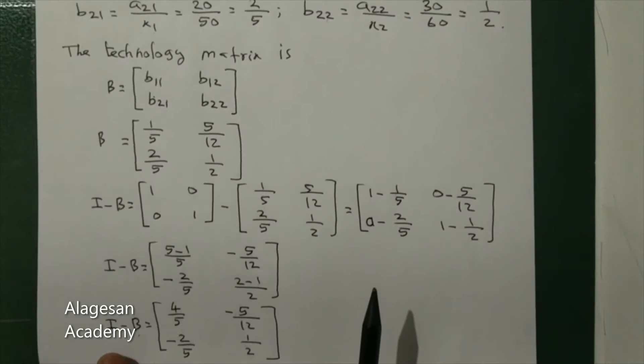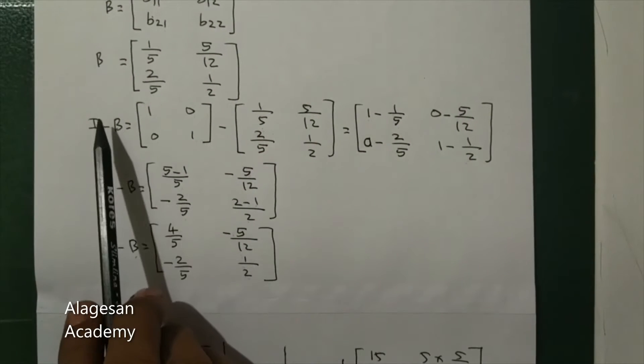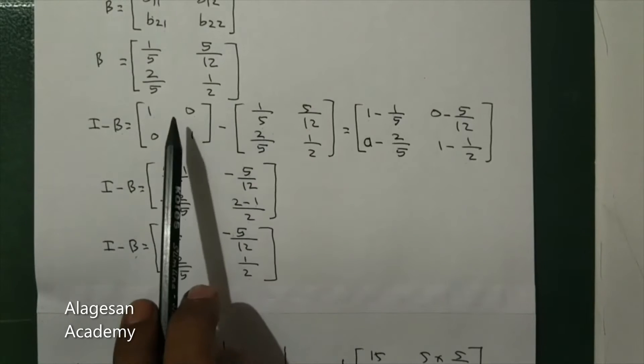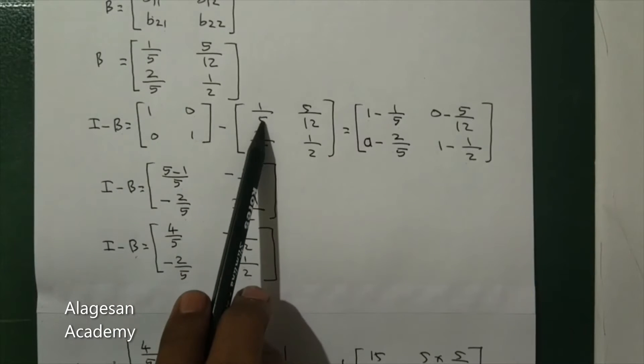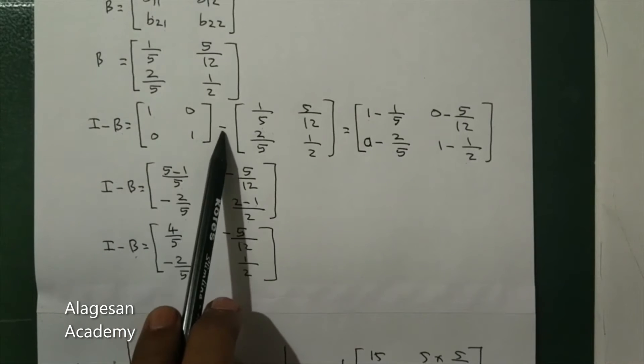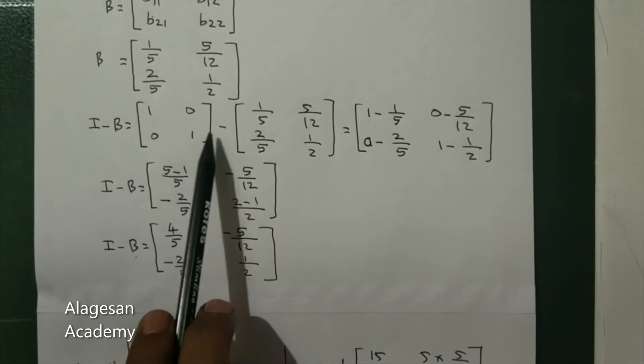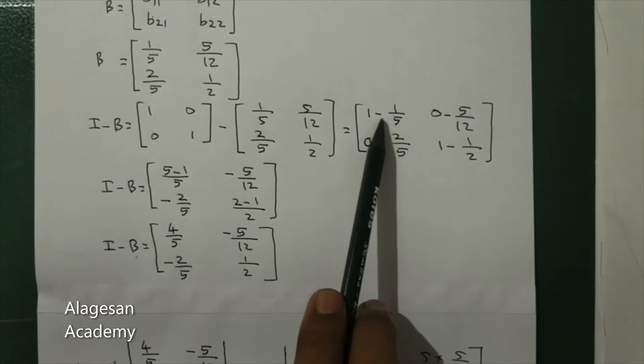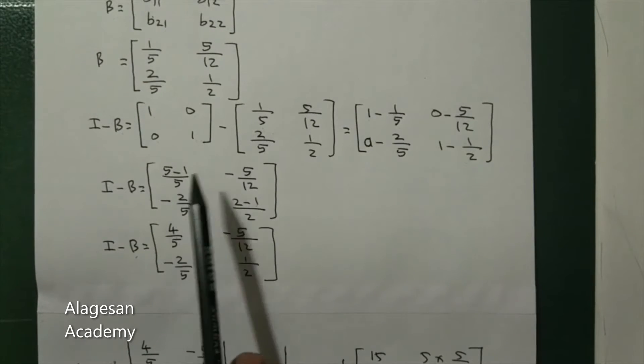That is the technology matrix. The matrix I minus B is: 1 minus 1/5 which is 4/5, minus 5/12, minus 2/5, and 1 minus 1/2 which is 1/2.